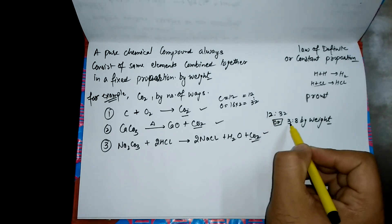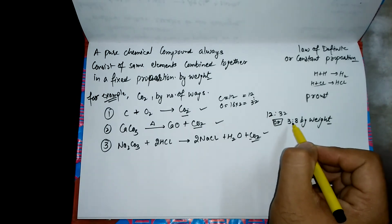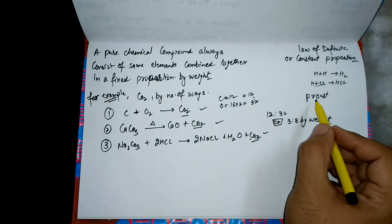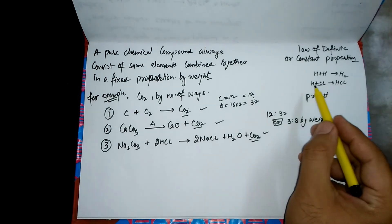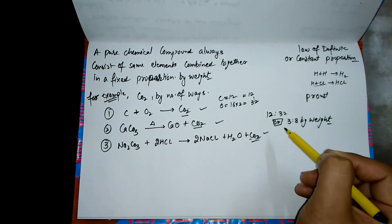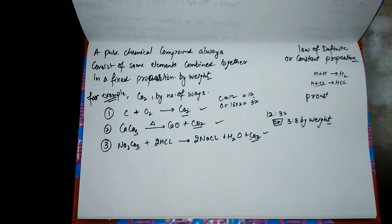We can get a ratio of 3:8. This is what the Joseph Proust scientist dealt with—the composition of various elements present in a compound. This is law of definite constant proportion.